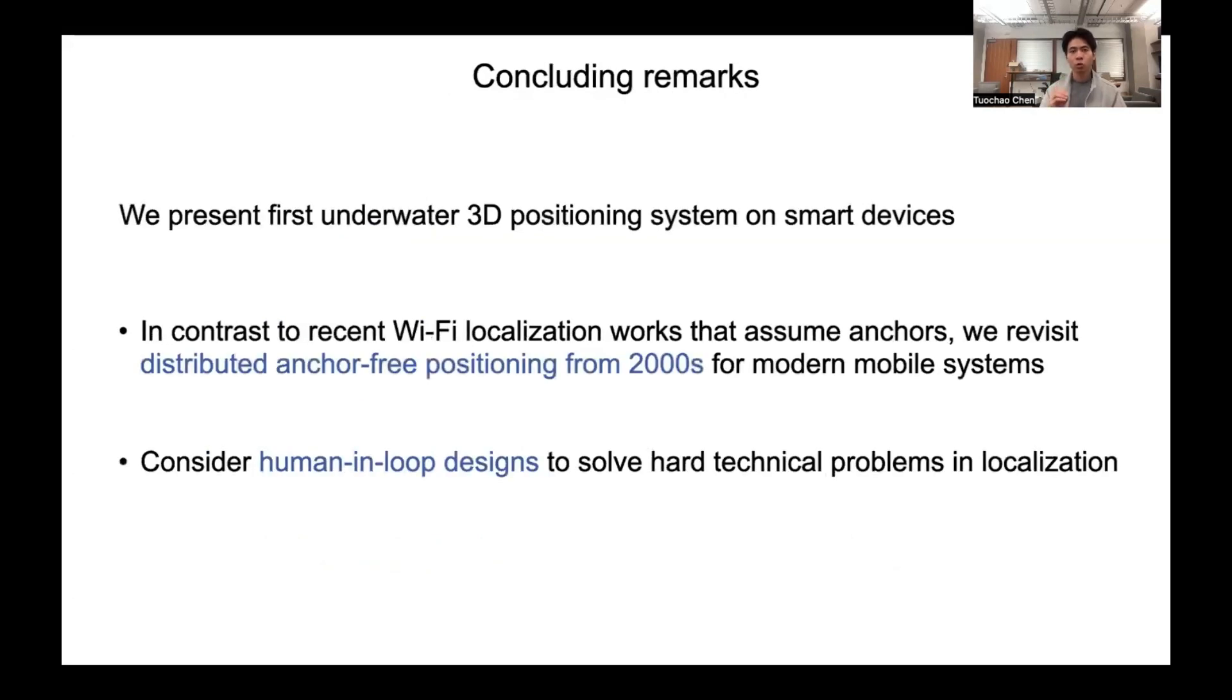To conclude, we present the first underwater 3D positioning system on smart devices. Taking a step back, we show that revisiting the distributed anchor-free positioning algorithms proposed back in the 2000s can still be very useful for modern mobile systems. Furthermore, human-in-the-loop design can help solve hard technical problems such as ambiguity, which otherwise would be very challenging in our scenario. Thank you.